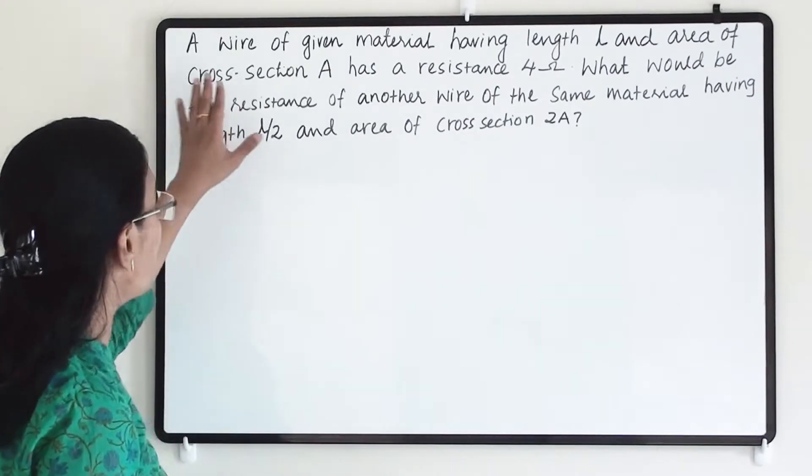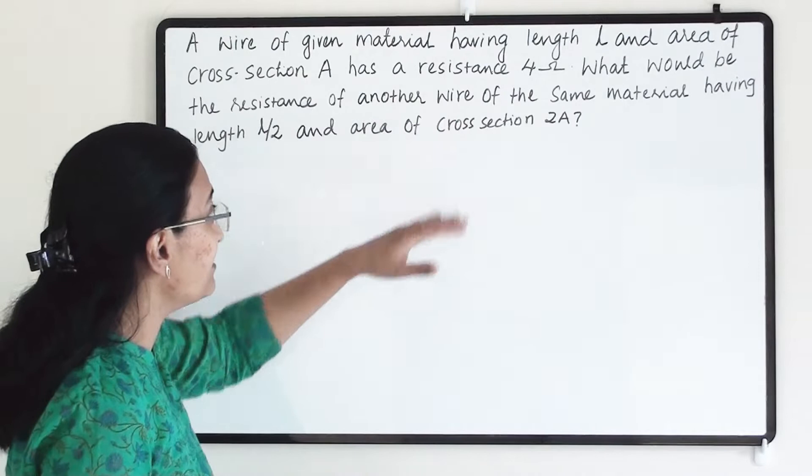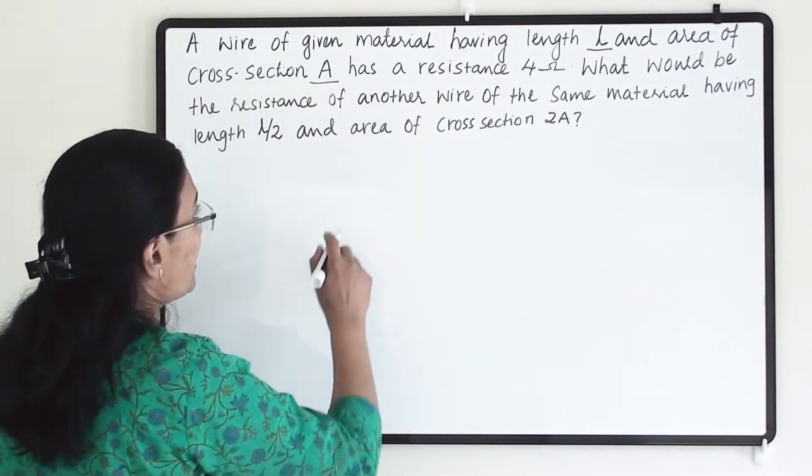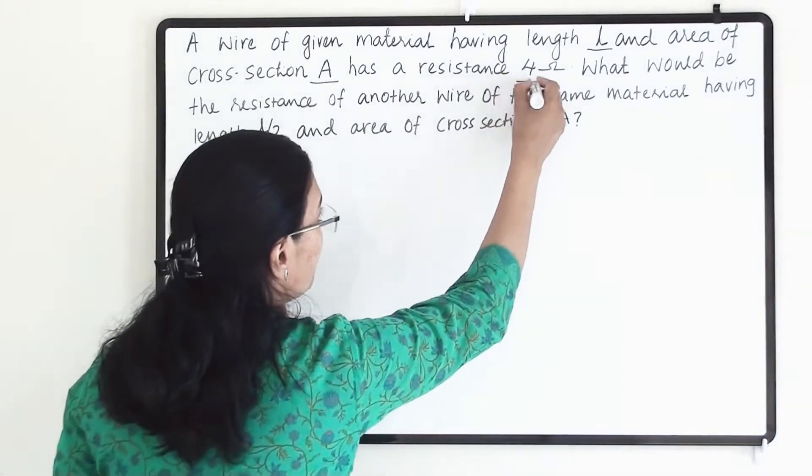It says that a wire of given material having length L and area of cross section A has a resistance of 4 ohm.